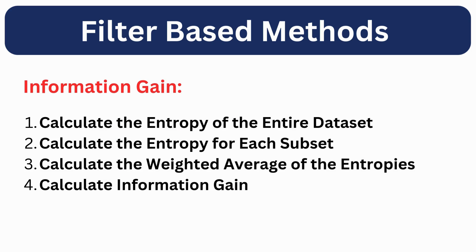Let's discuss another filter-based method: information gain. Information gain, or mutual information, is based on entropy and measures the amount of information one variable contains about another. Features with higher information gain are more informative and thus more useful. Here we have listed the key steps in the calculation of information gain.